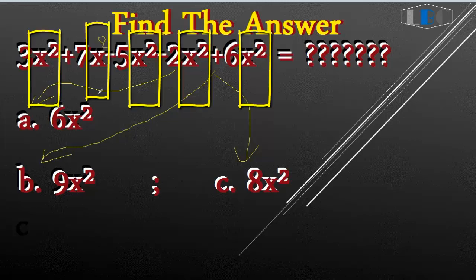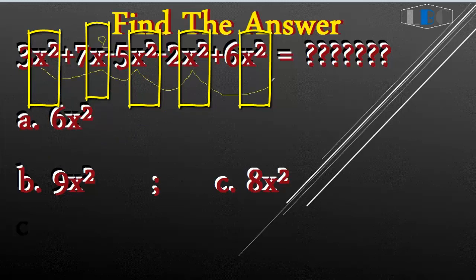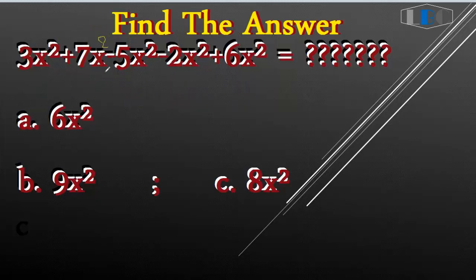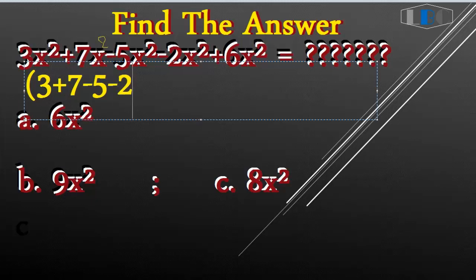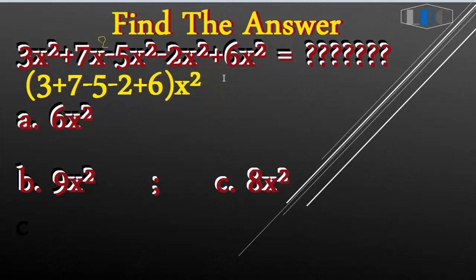First, look at each term — they all have x², the same variable. Because they are like terms with the same x², we can group all their coefficients together. We put all the numbers in, including the plus and minus signs, and combine only the x² terms.